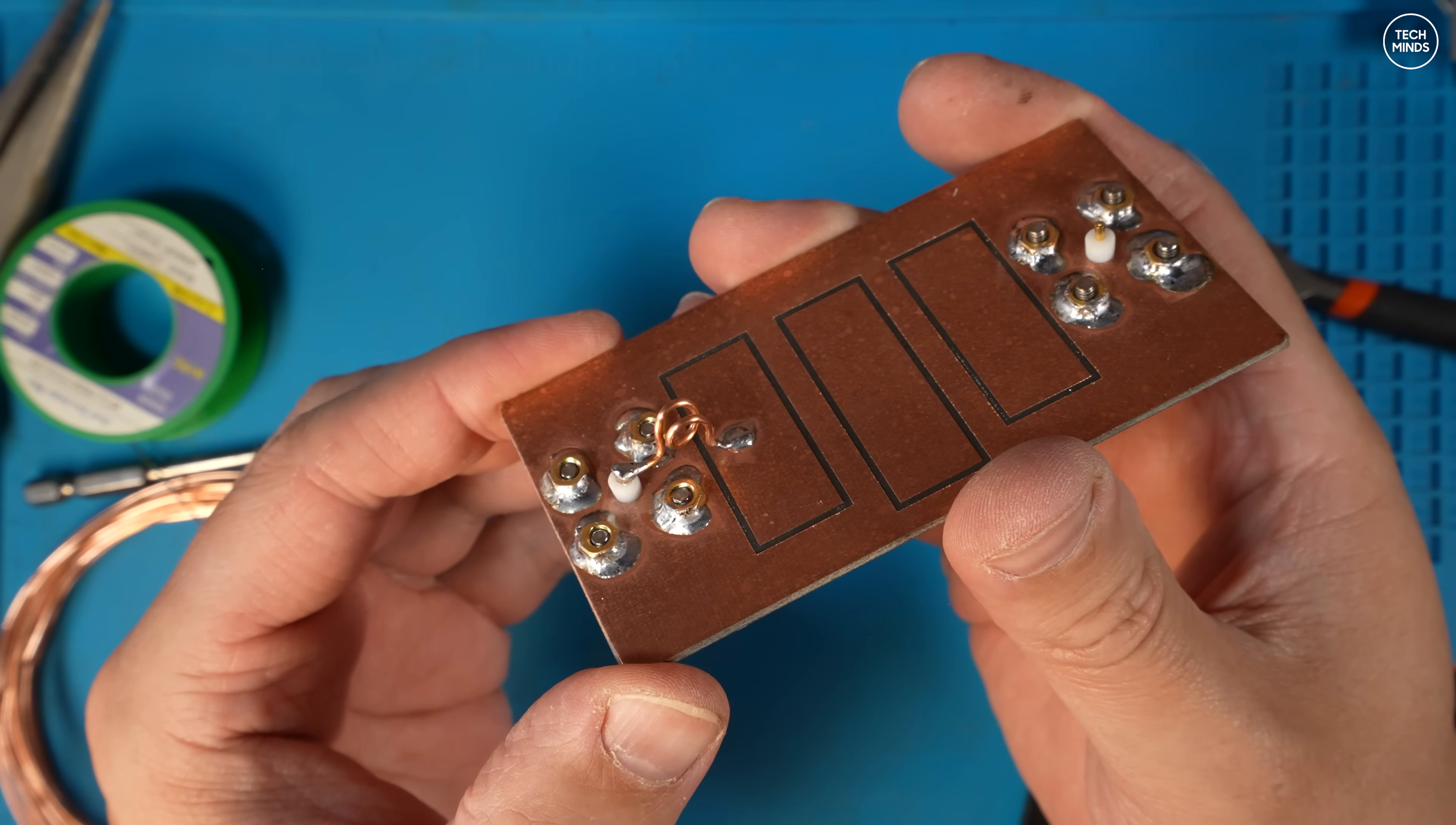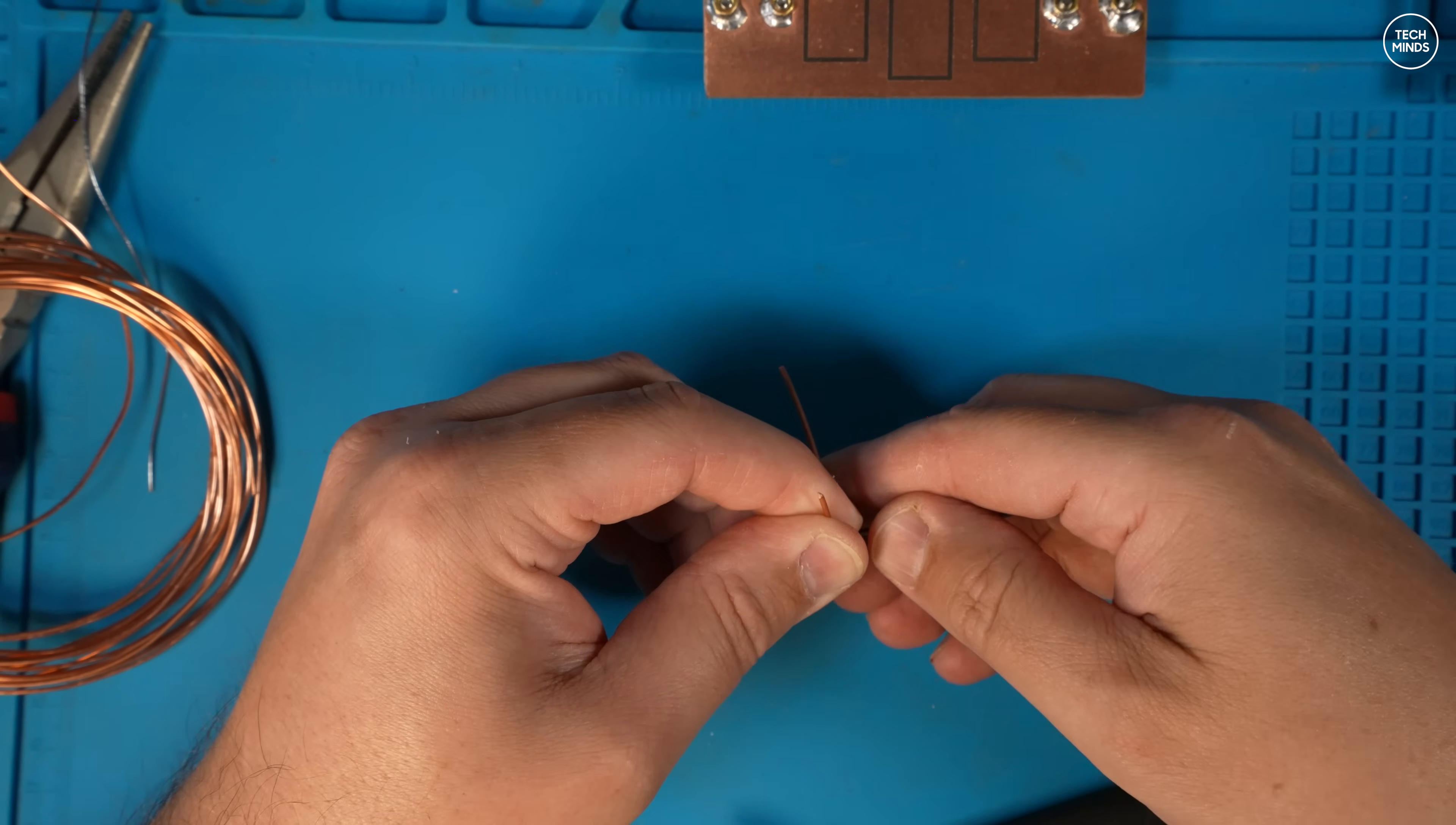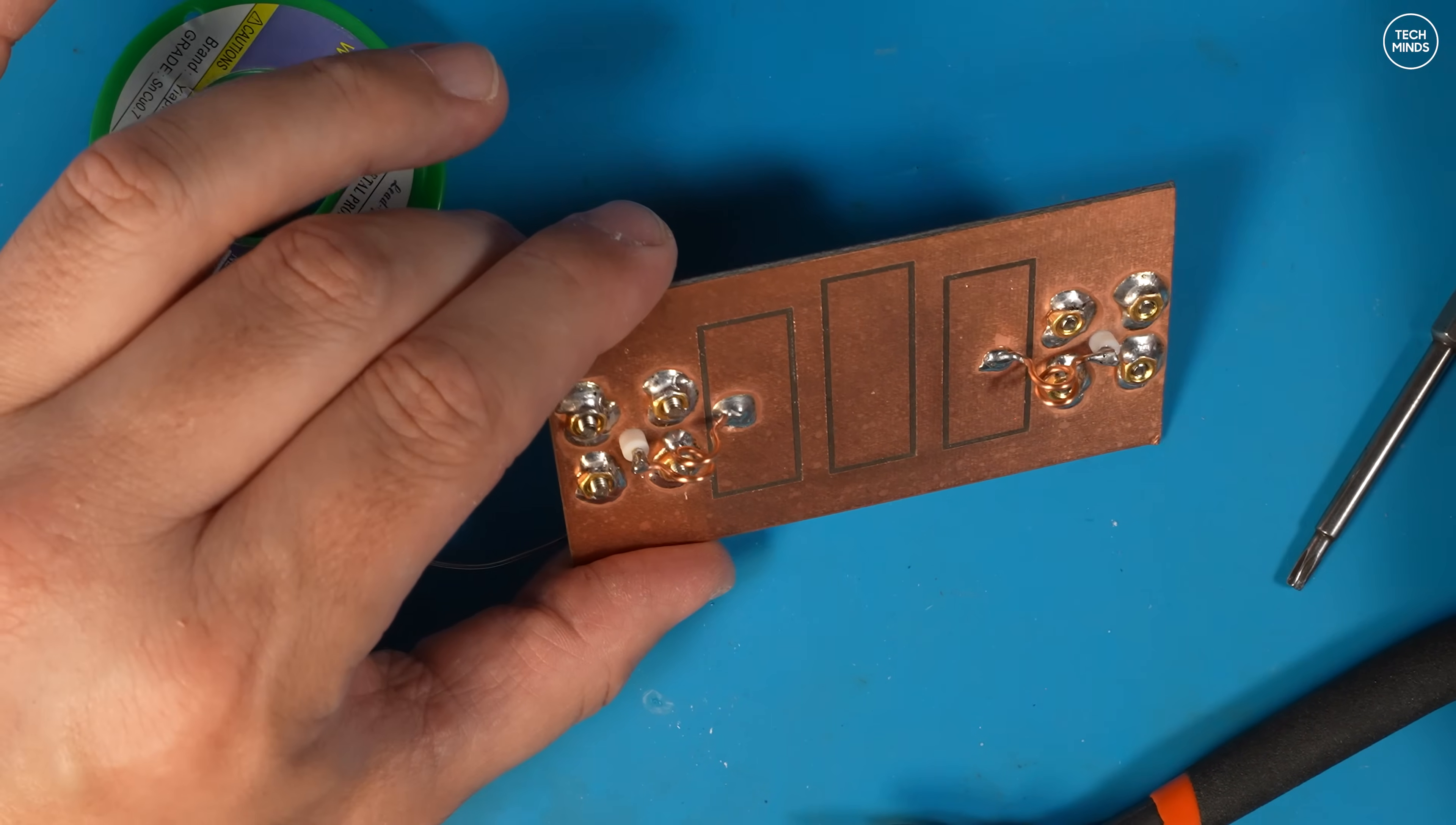So this is how the first one looked once soldered into place. I then made the other two-turn coil using the same copper wire and same 4.1 millimeter former, but this time coiling it anti-clockwise. This second two-turn coil gets soldered onto the other end of the PCB between the PCB and the center pin of that other N-type socket.